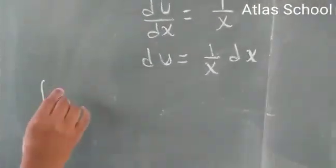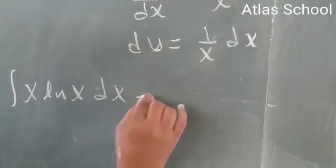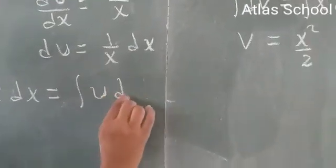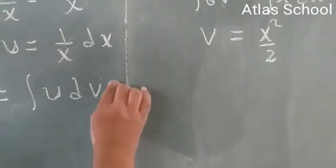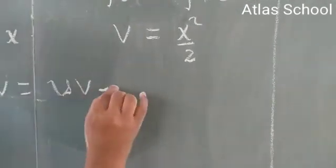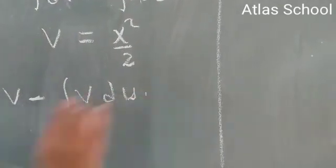The integral of x ln of x dx, which is the same as the integral of u dv, which can be solved as u times v minus the integral of v du.